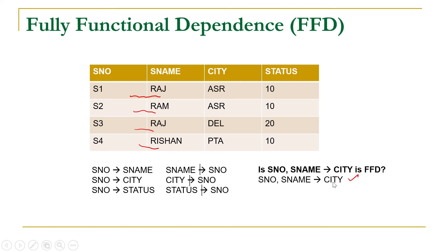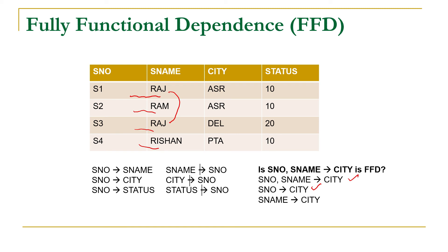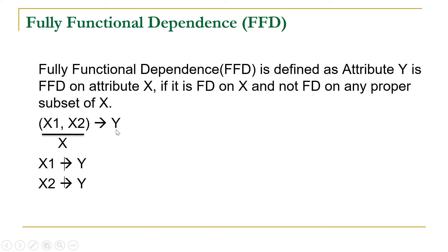Now in order to satisfy the case of fully functional dependence, city should not be functionally dependent on any subset of X. This combination has two subsets: one is S number and another is S name. Let us check whether S number to city is functionally dependent. Since S number is unique, for each value of S number we will get only one value of city, so S number will functionally determine city. Now for supplier name to city: for a given value of supplier name like Raj, we are getting multiple values of city, so S name to city is not functionally dependent.